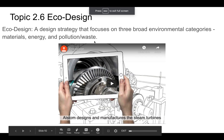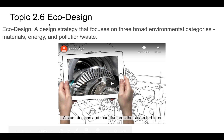Welcome back. We're now talking about eco design. From the glossary of terms, eco design is a design strategy that focuses on three broad environmental categories: materials, energy, and pollution and waste. The whole idea is that we're reducing or thinking carefully about the materials, energy, and pollution and waste that we're using.